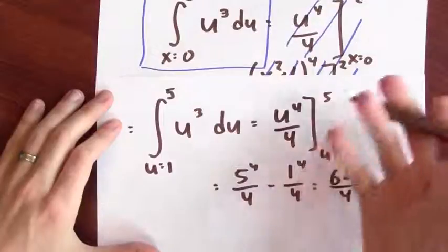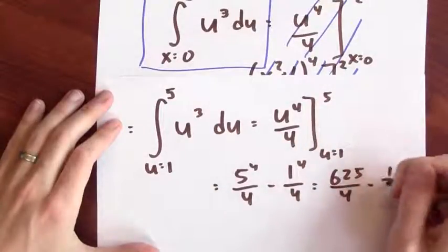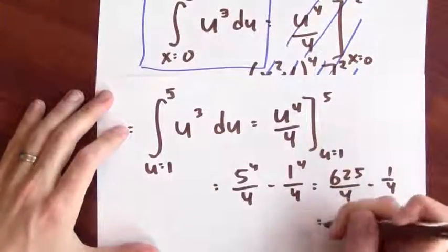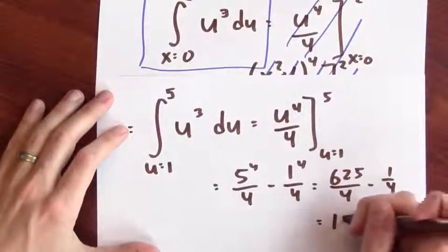And 5 to the fourth is 25 squared, which is 625 over 4. And this is now the same as before, minus 1 quarter. And just like before, this ends up being 156.